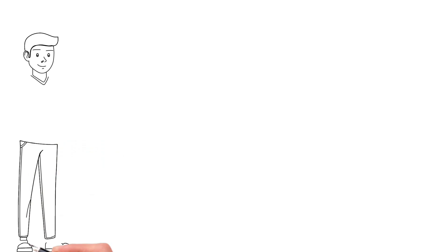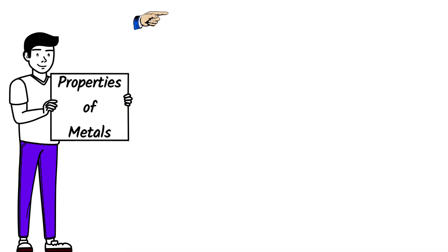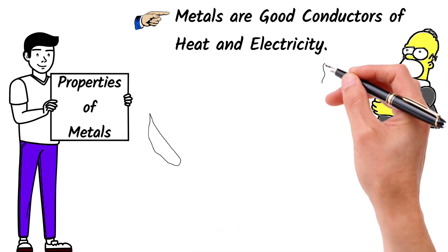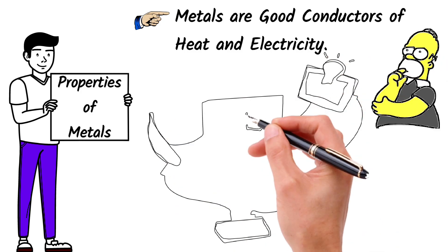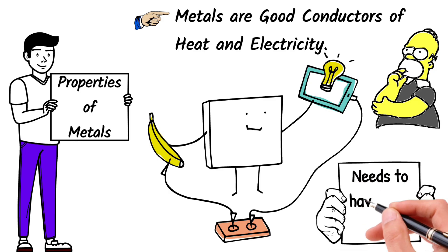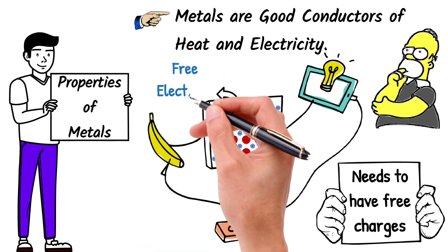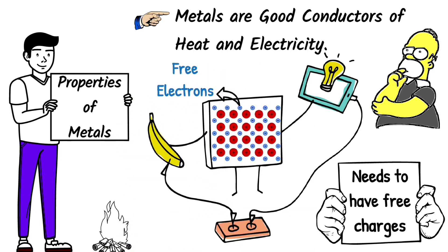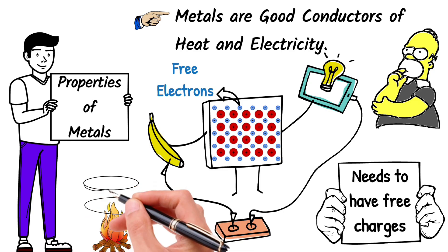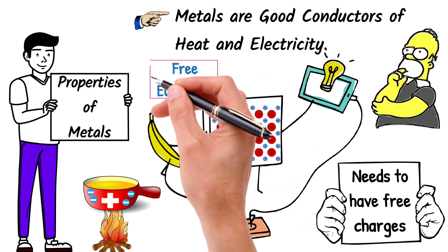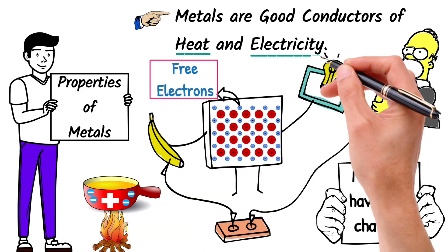Let me explain some properties of metals. Metals are good conductors of heat and electricity. Why are metals such good conductors of heat and electricity? In order for a material to conduct electricity, it needs to have free charges that can move current. Metals have free electrons that can carry electrical current through the material. Similarly, for conducting heat, these free electrons can transfer thermal energy through the metal by colliding with neighboring atoms and passing on their kinetic energy.